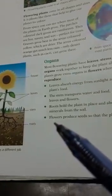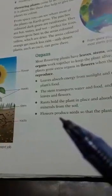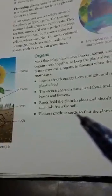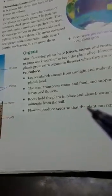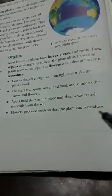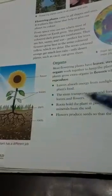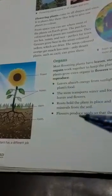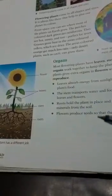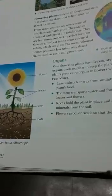The last one is flowers. Flowers produce seeds so that the plant can reproduce. Some flowers change into fruits, and inside the fruit the seed is present.